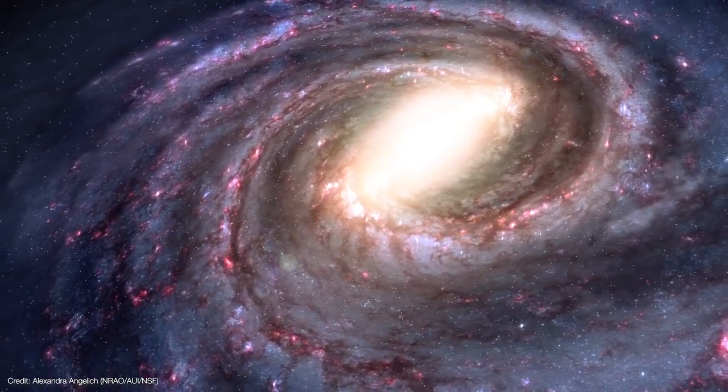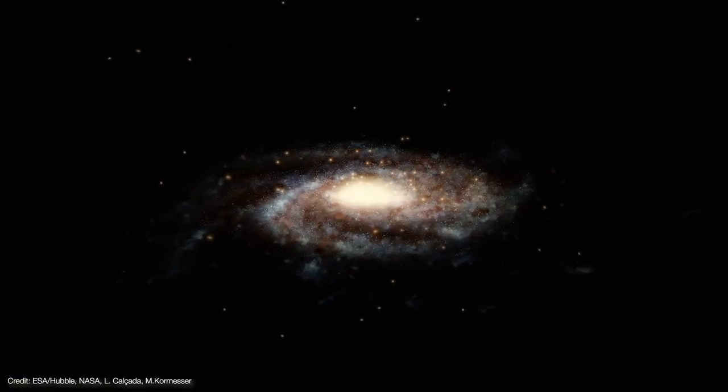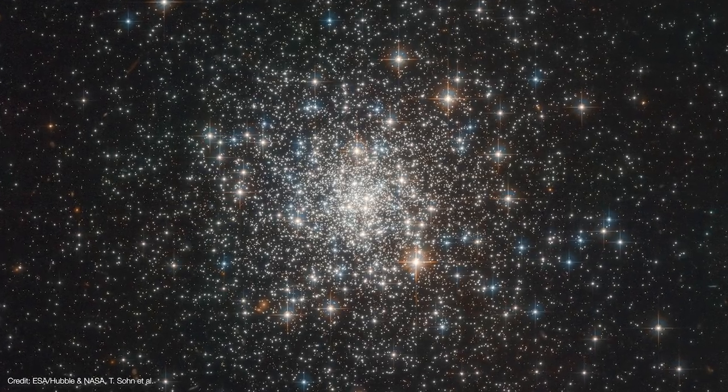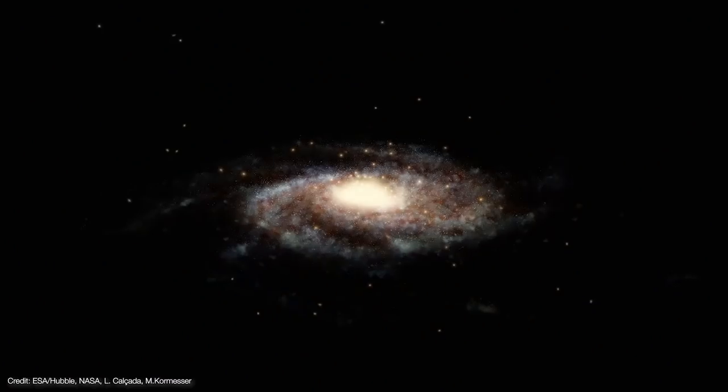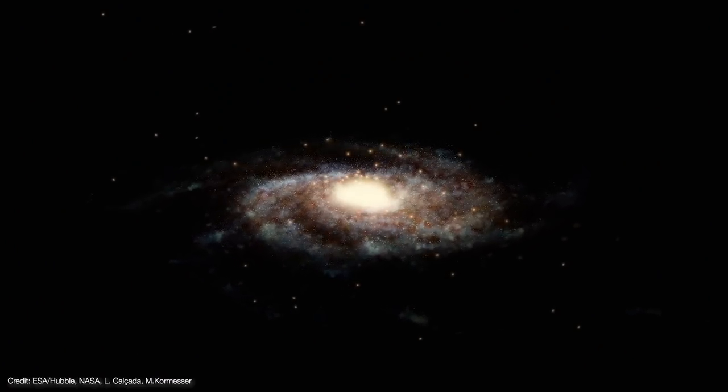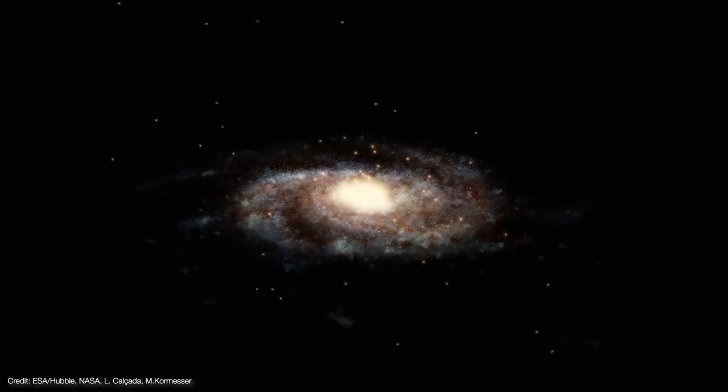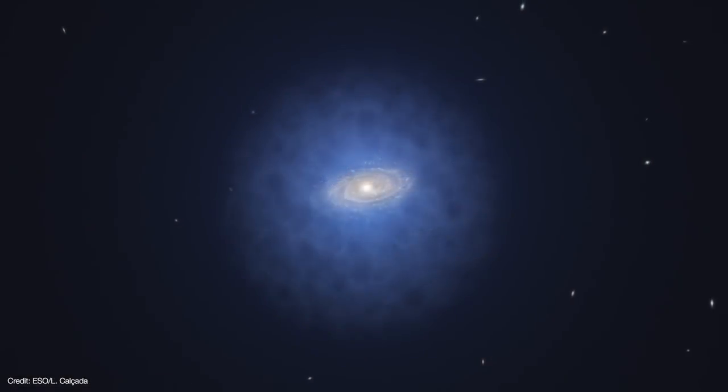Surrounding the bulge and disk is a halo of globular clusters, each home to hundreds of thousands of older stars. But all 400 billion stars of the disk, the bulge, and the halo only amount to a few percent of the mass of the galaxy.